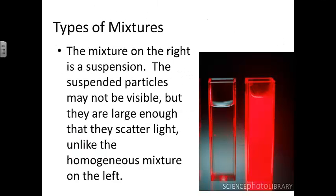The mixture on the right in this image is a suspension. Red light is being shown through both cuvettes. The suspension on the right scatters the red light, so the liquid appears to be glowing red. On the left, the liquid appears clear — only a little light bouncing off the glass cuvette is visible. The homogeneous mixture on the left has dissolved particles small enough that they do not scatter the light.